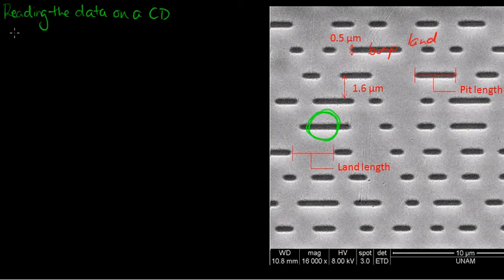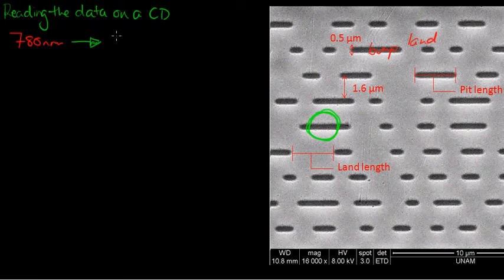The laser diode actually starts out at 780 nanometers. When it goes through the plastic surface, that bottom layer on the CD, it changes. Because it has a refractive index of 1.55, it changes the wavelength of the light landing on the metal surface, on the aluminum surface, to 503 nanometers, which is in the green region of the spectrum.